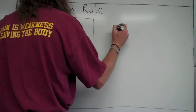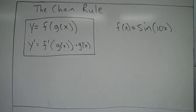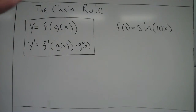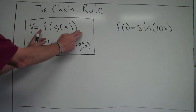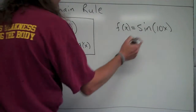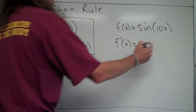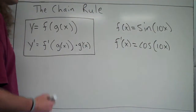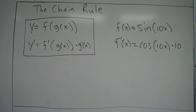Another example is with a trig function. Say f of x equals sine of 10x. So far we've only dealt with trig functions like sine of x or cosine of x, where the inner function has always just been x. Now 10x is our inner function. We work from the outside first — sine is our outer function. The derivative of sine is cosine, we keep the inner function the same, and then at the end we multiply by the derivative of the inner function, which is 10. So f prime equals cosine of 10x times 10.